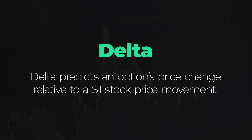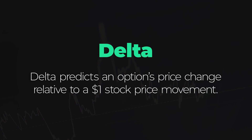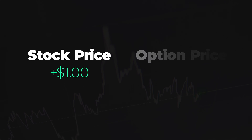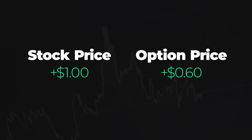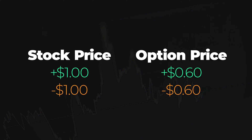The first option Greek you need to understand is called Delta. Delta predicts an option's price change relative to a $1 shift in the stock price. In essence, it's the sensitivity of your option's price relative to changes in the stock price. We can visualize Delta by using an options pricing calculator, plotting the call prices at various stock prices.